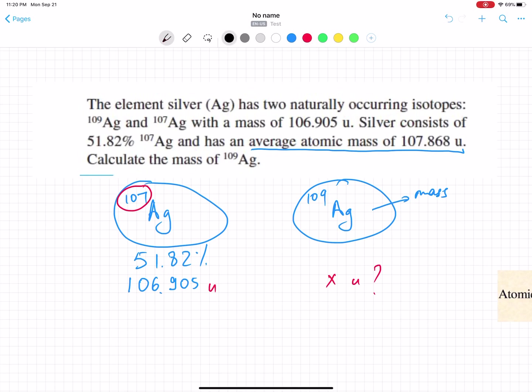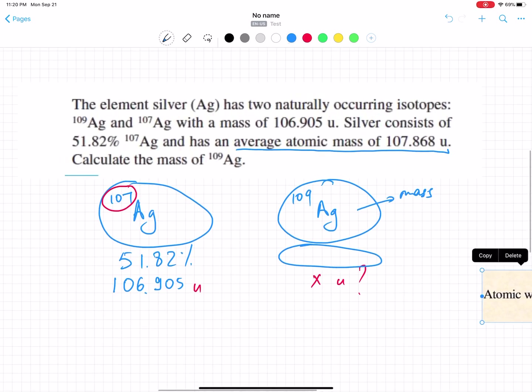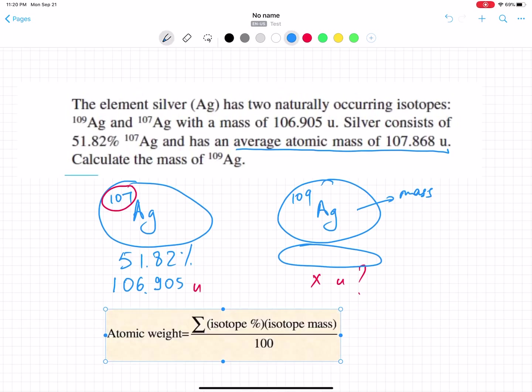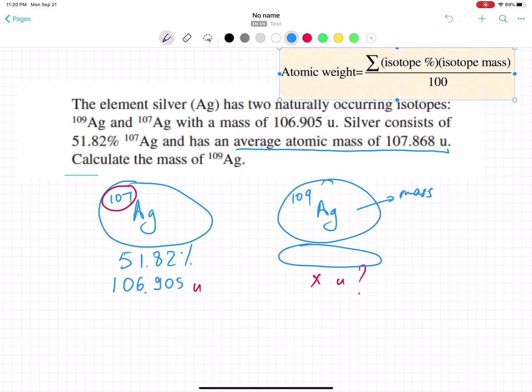In order to find that number, we need to discuss percentage because we're going to apply this formula: atomic weight equals the sum of isotope percentage times isotope mass, divided by 100. We will apply this formula.